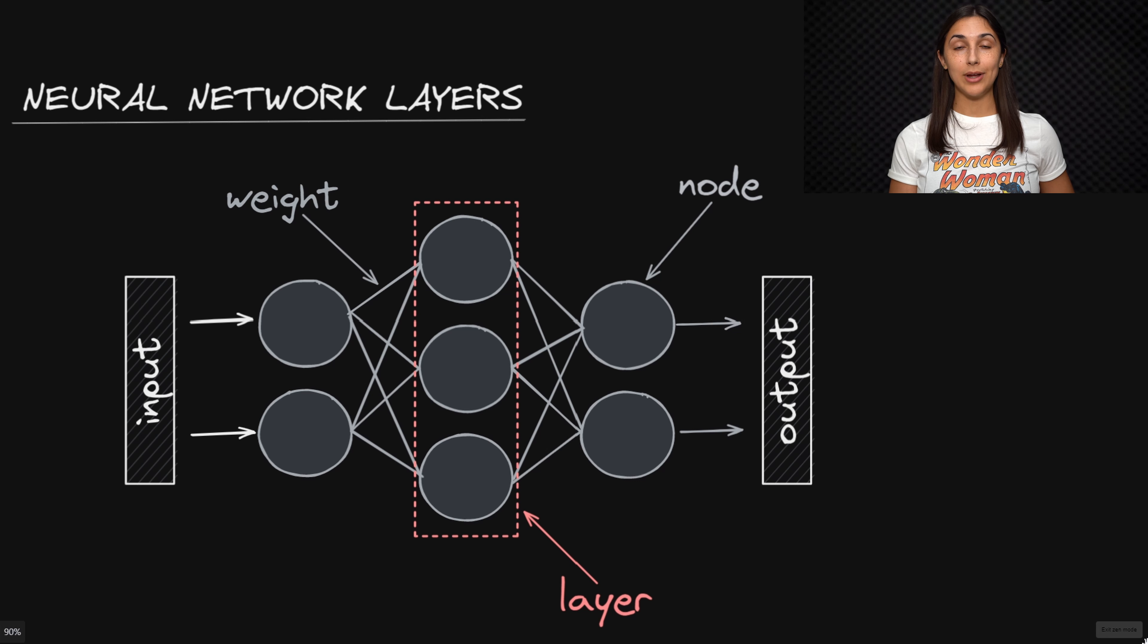An artificial neural network is made up of multiple processing units called nodes that are organized into layers. These layers are connected to each other with weights. A general network is made up of an input layer